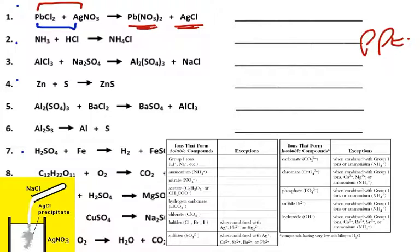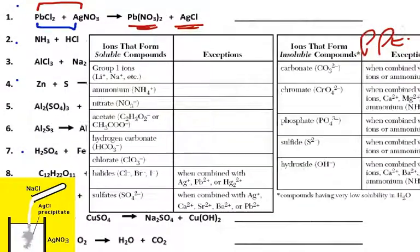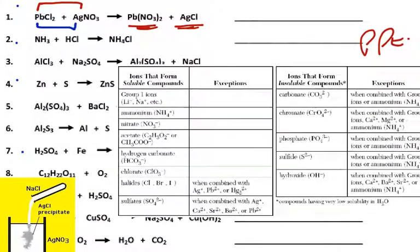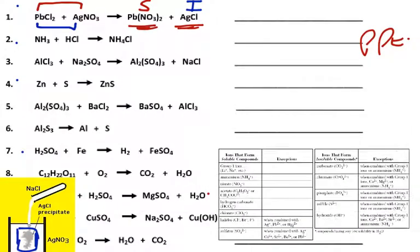So we can check lead nitrate. We go to our chart, we look for nitrates — nitrates are in the middle of the chart, third entry in the first column, and nitrates have no exception. So lead nitrate is soluble and will not form a precipitate. Now we go to the chlorides — halides. Chlorides are normally soluble, but Ag is an exception. I'm looking at the second from the bottom in the soluble column. So AgCl is insoluble and will form a precipitate in solution.